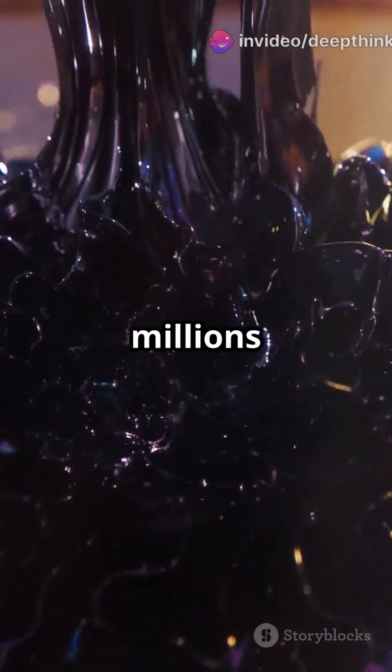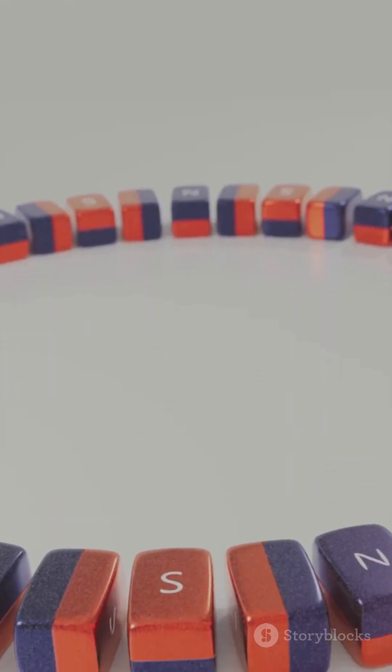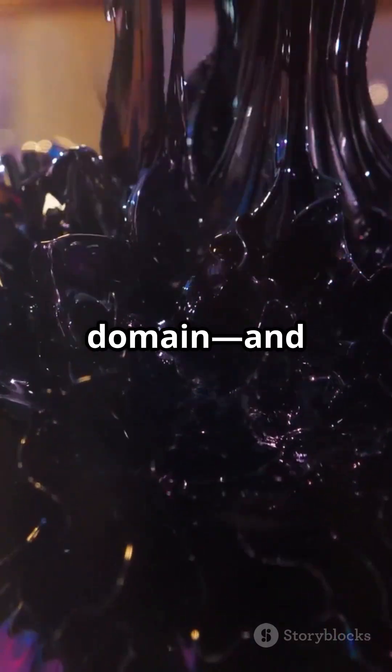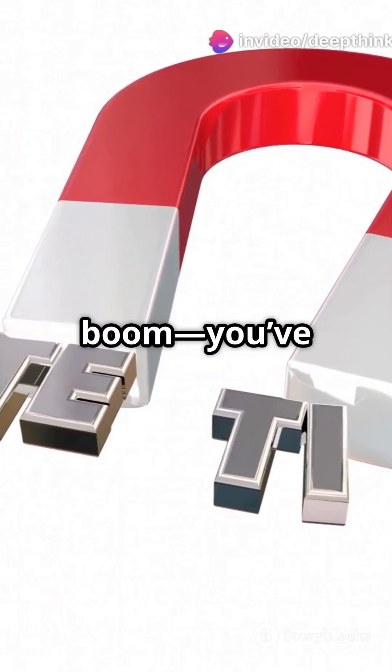But in magnets, millions of electrons have their spins aligned, all pointing the same way. This alignment creates a magnetic domain, and when lots of these domains point in the same direction, boom, you've got a magnet.